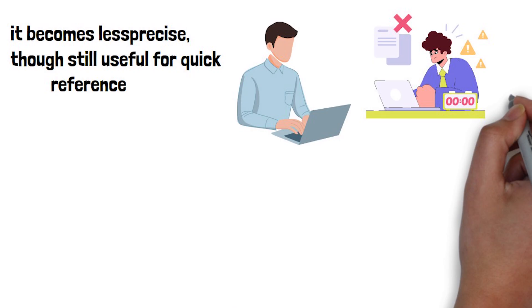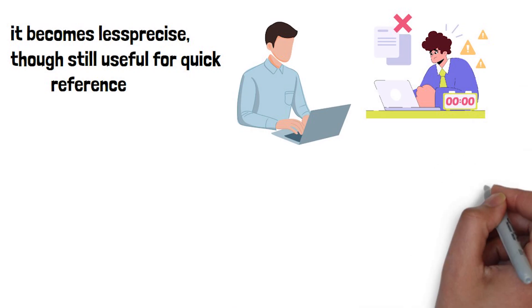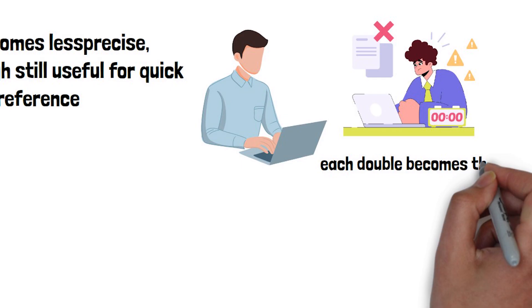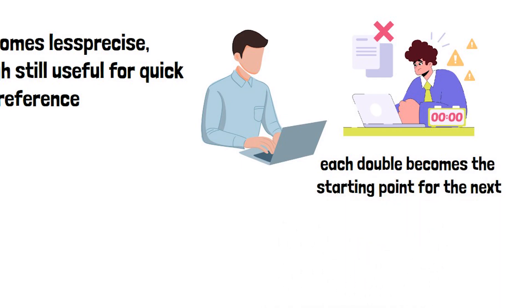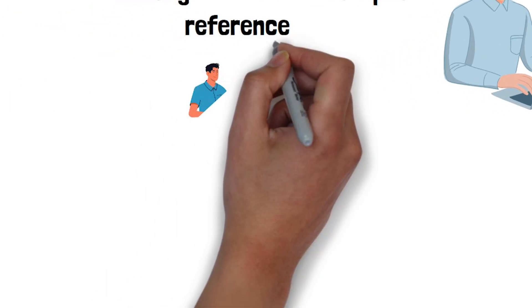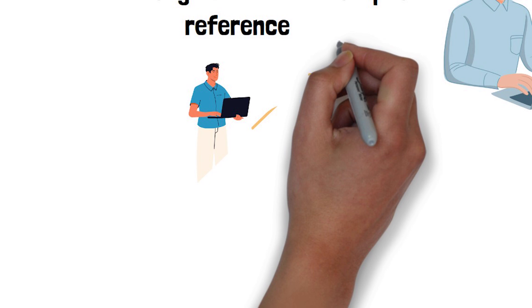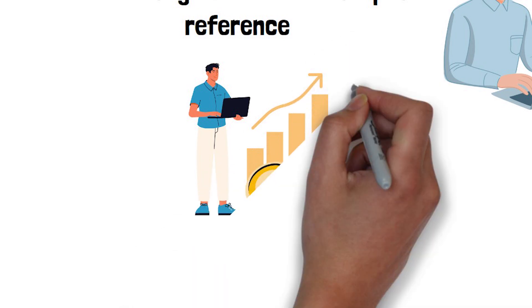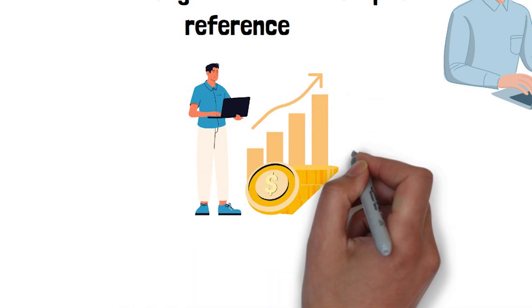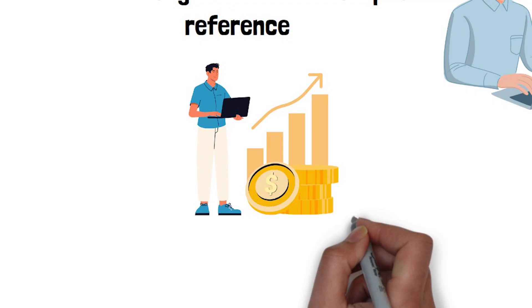The real magic, though, isn't in doubling your money once. In long-term investing, each double becomes the starting point for the next. This compounding effect means your third or fourth doubling produces far more growth than the first, because you're building on a larger base each time.